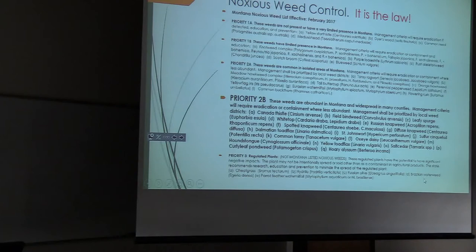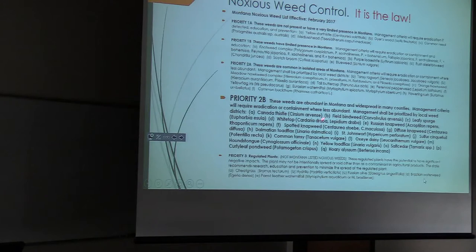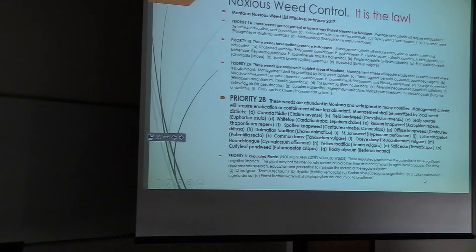52 plant species are designated noxious in Montana. The main ones out there include leafy spurge, white top, spotted knapweed, and dalmatian toadflax — some of the worst players and the hardest to control. Lacey and Marlow from MSU found that runoff and sediment yields are increased under knapweed, with economic losses probably more like 60 to 80 million dollars per year in Montana now.